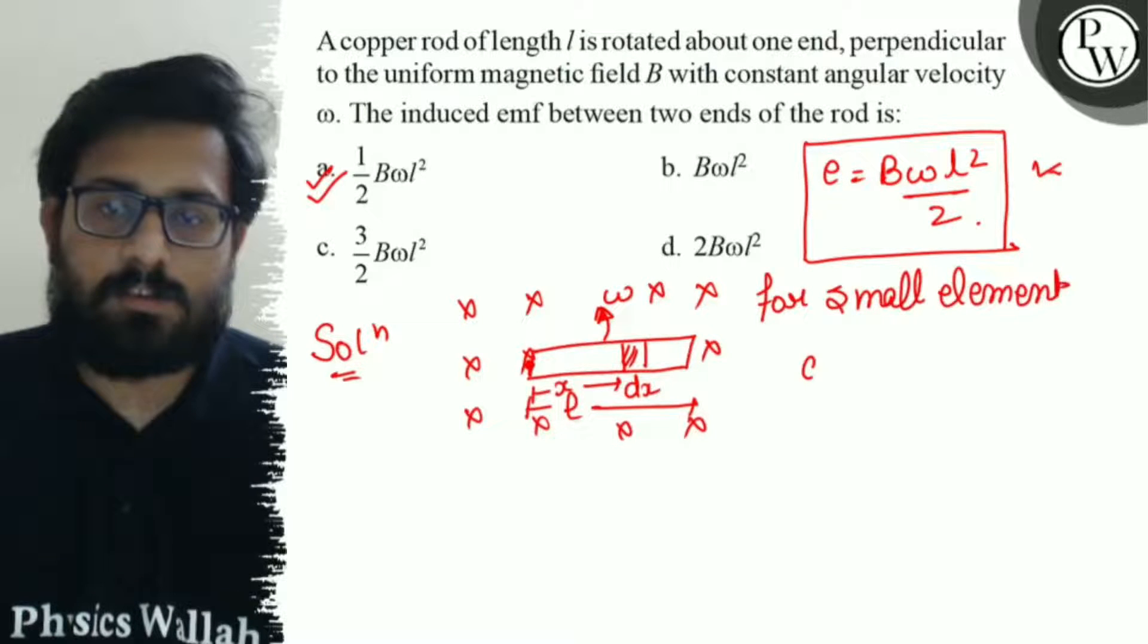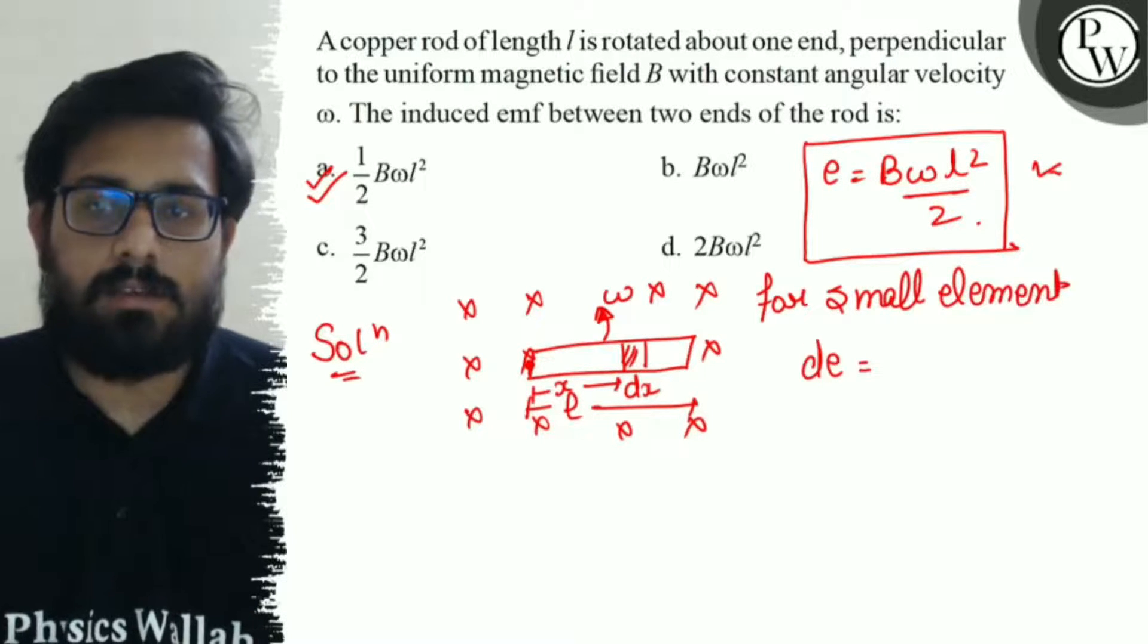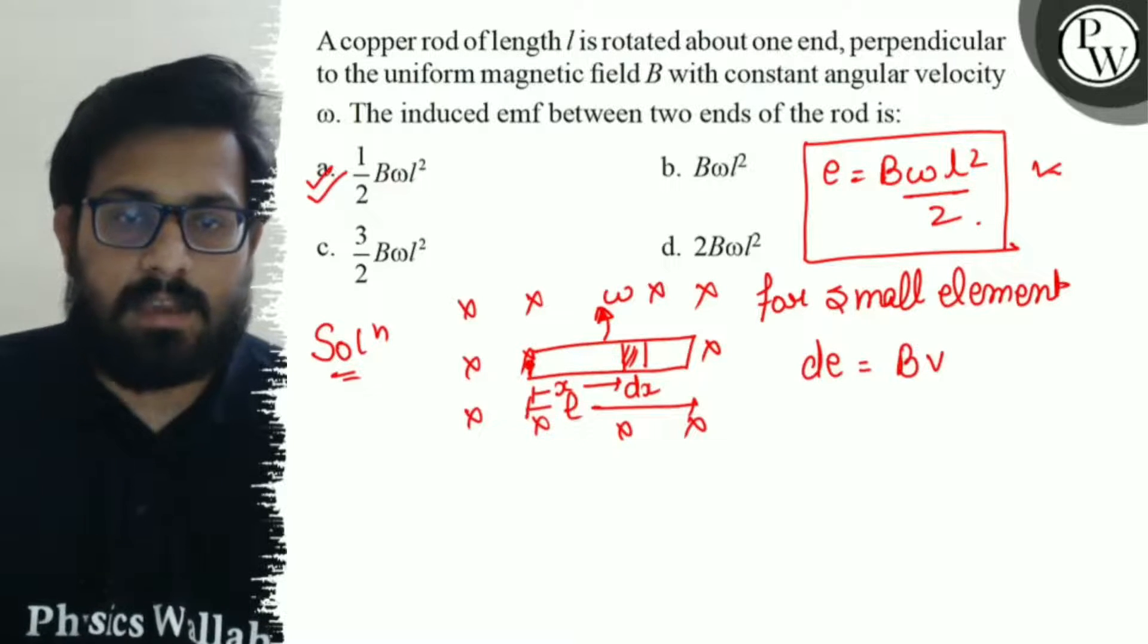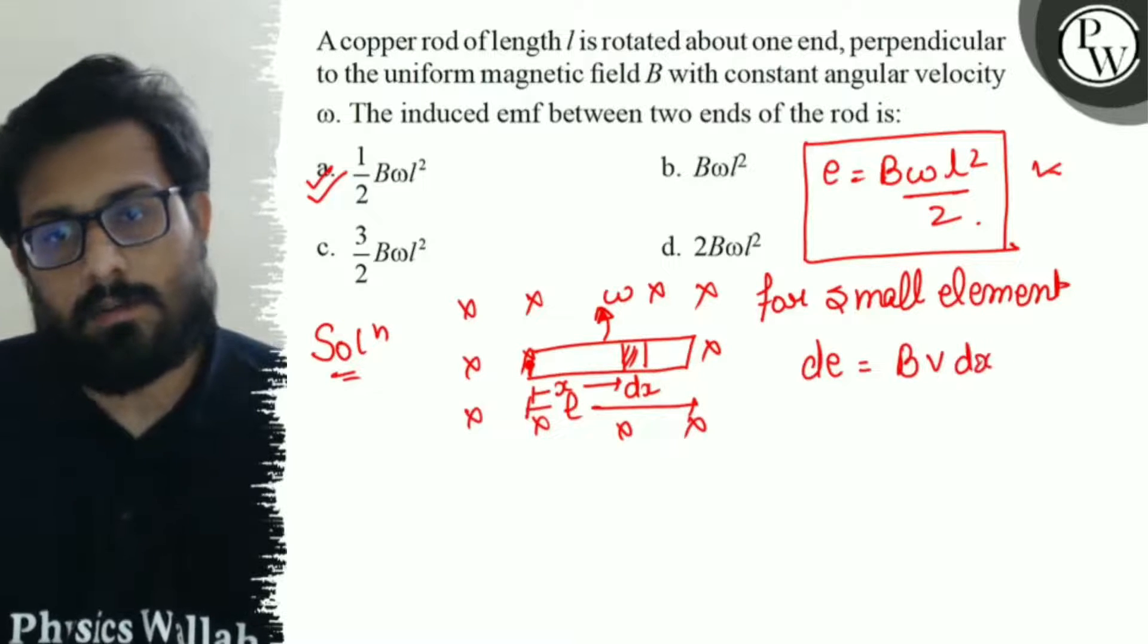for the small element, we have a small induced EMF, which can be written as B into V into L, where L is the length, which is dx.